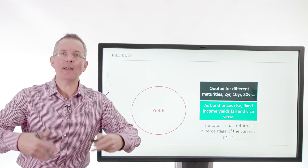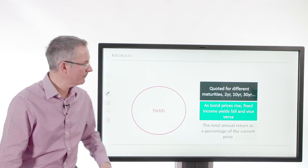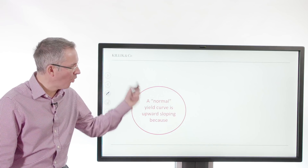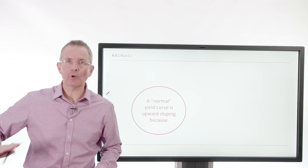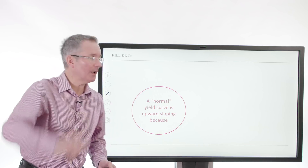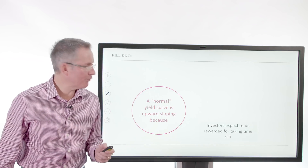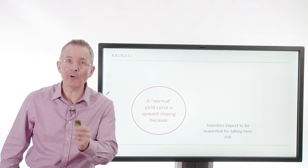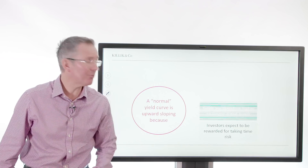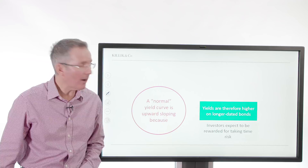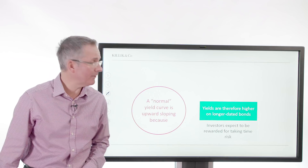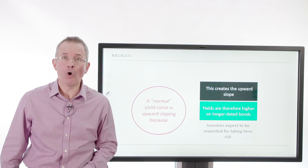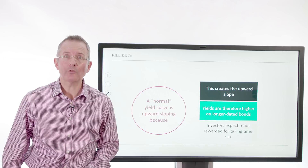On most of these things, the coupon is fixed. Therefore the price varies to change the yield, and they're quoted for different maturities. So the government borrows over different lengths of time — there are two-year, five-year, ten-year, and so on. To summarise: a normal yield curve is upward sloping. Investors expect to be rewarded for taking time risk — it's called a term premium. Yields are therefore usually higher on longer dated bonds than shorter dated, and this creates the so-called normal upward slope.